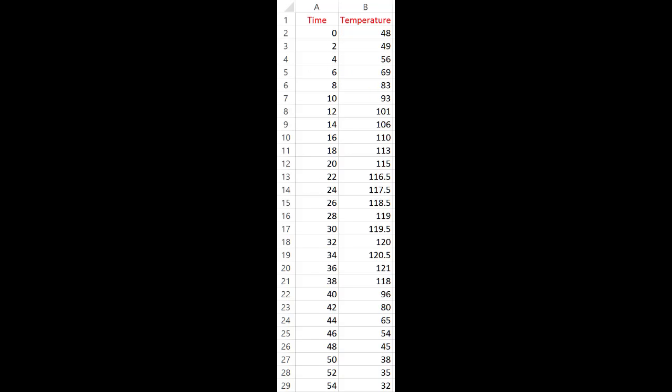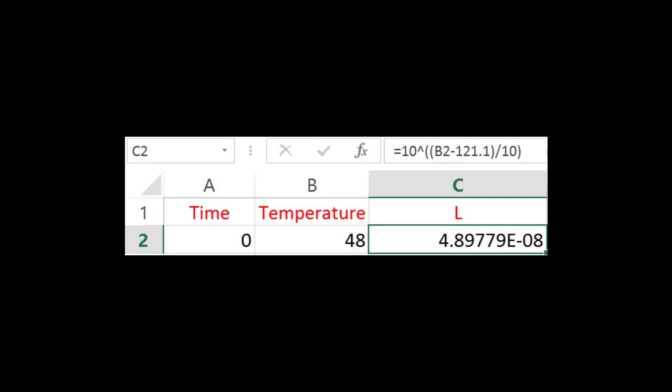So our next step is to convert these temperature values to L as we saw in the previous screen. So we will enter that formula. As we see here in cell C2, notice that the formula is 10 raised to power B2, which refers to the temperature, minus 121.1, and then divided by 10, which is the Z value, 10 degree C. So note that this is the formula for the lethal effect as we had derived on the previous screen.